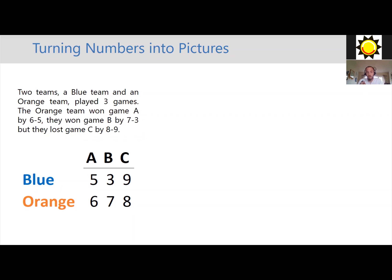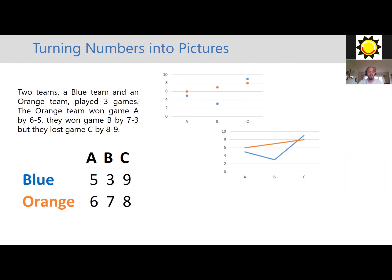We can also take those numbers and really turn them into pictures — into a graph or a chart. Here we've simply used points where we can see the blue team and the orange team scores in each of those three games. We can join those points together to make a line chart, which gives a slightly different emphasis of the data — the movement over time, over the course of those three games. Another thing we could do is present those numbers using a bar chart. Those three charts are actually showing you the exact same data as in the table and the sentence, but by drawing those pictures and visualizing it in different ways, we get a slightly different and much clearer sense of what those numbers actually mean.